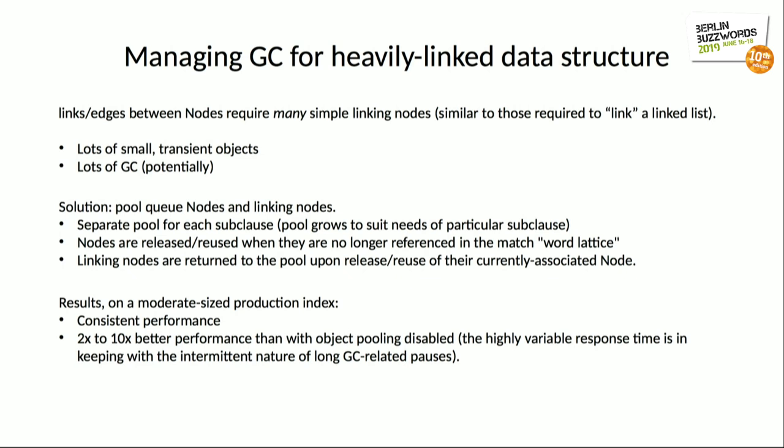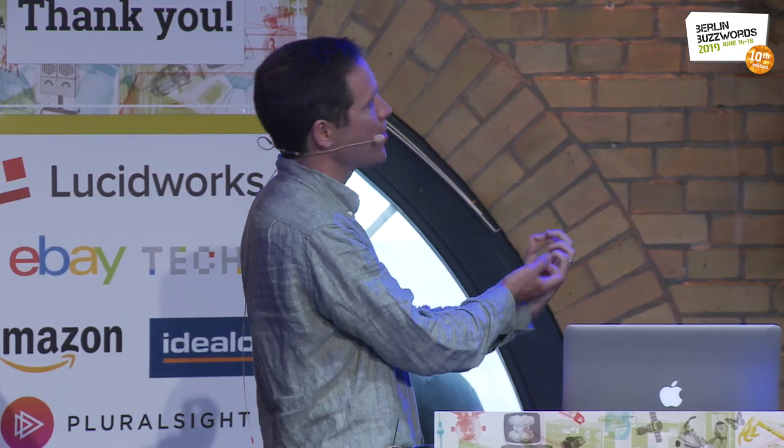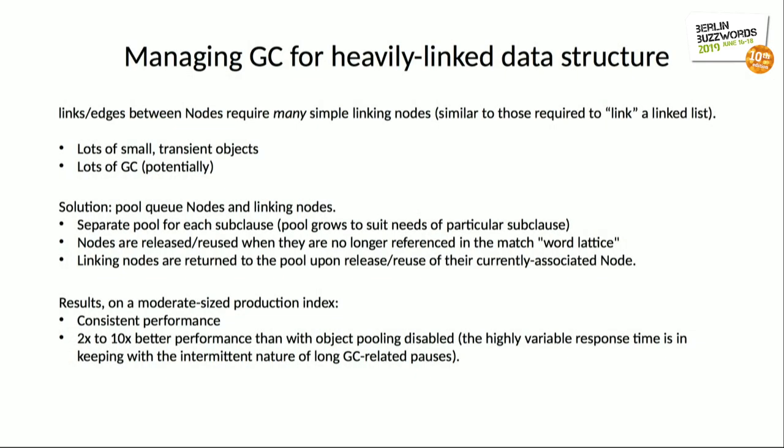This is a linked approach. A lot of data structures in Lucene are array-based because they are very fast and generate little garbage collection. The linked approach is necessary for this two-dimensional situation where nodes can get yanked out and positions need to close up, but it results in lots of small transient objects — not just storage nodes but also the linking nodes. Implementing a queue for the nodes and the linking nodes resulted in two times to ten times better performance compared to an implementation with object pooling disabled, in keeping with the intermittent nature of long garbage collection related pauses.